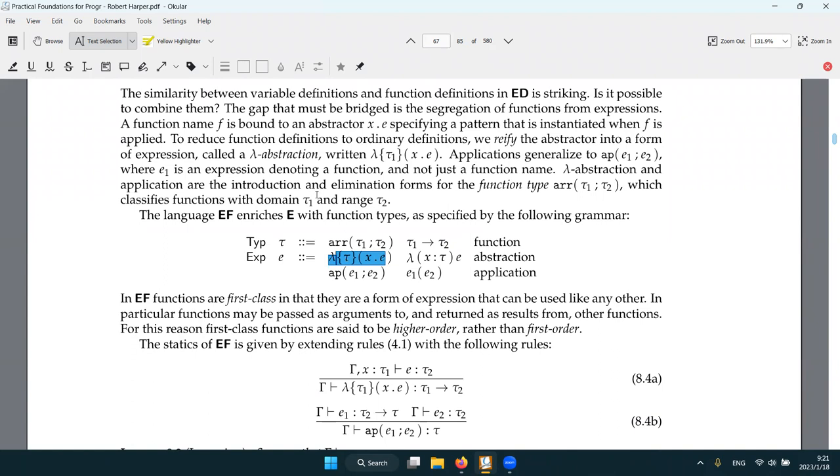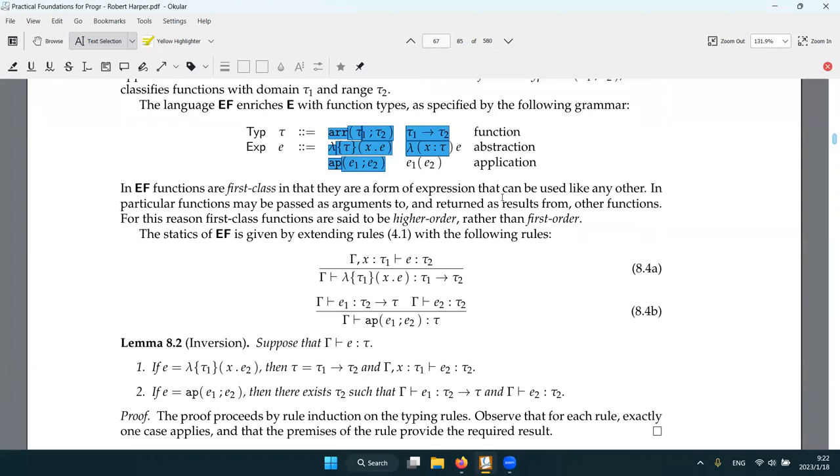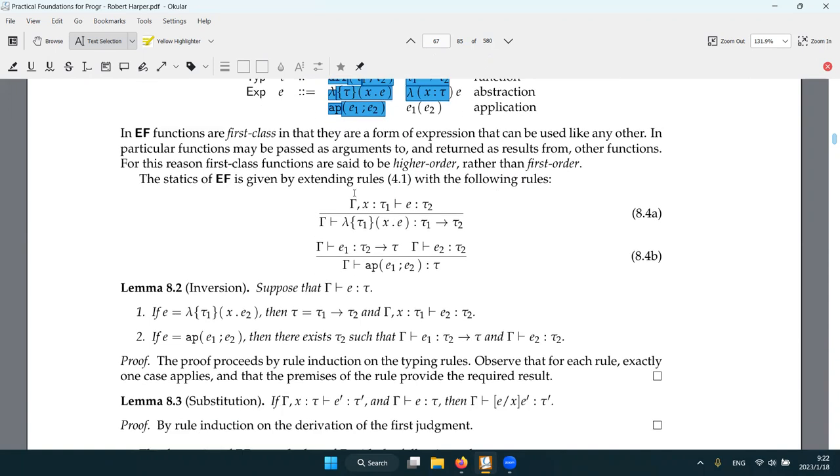So in this case, we have a function type that we call arrow from like tau 1 to tau 2. And we have a lambda abstraction. Lambda abstraction that, again, take a parameter and then the body is evaluated to an expression. But this lambda itself is expression. And again, we have application. So look like we are doing more stuff, but actually this form become very simpler to define. And I guess it's the beauty of kind of functional programming.